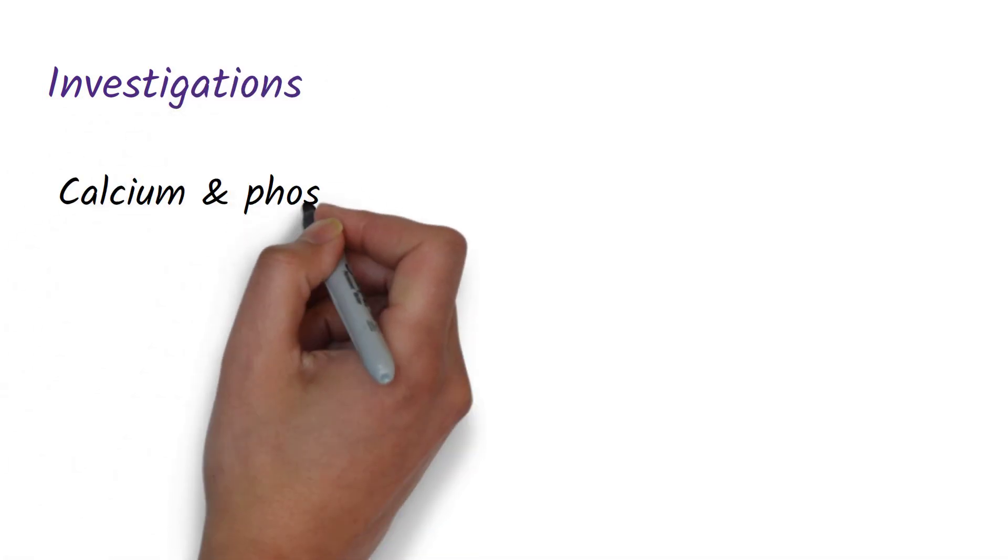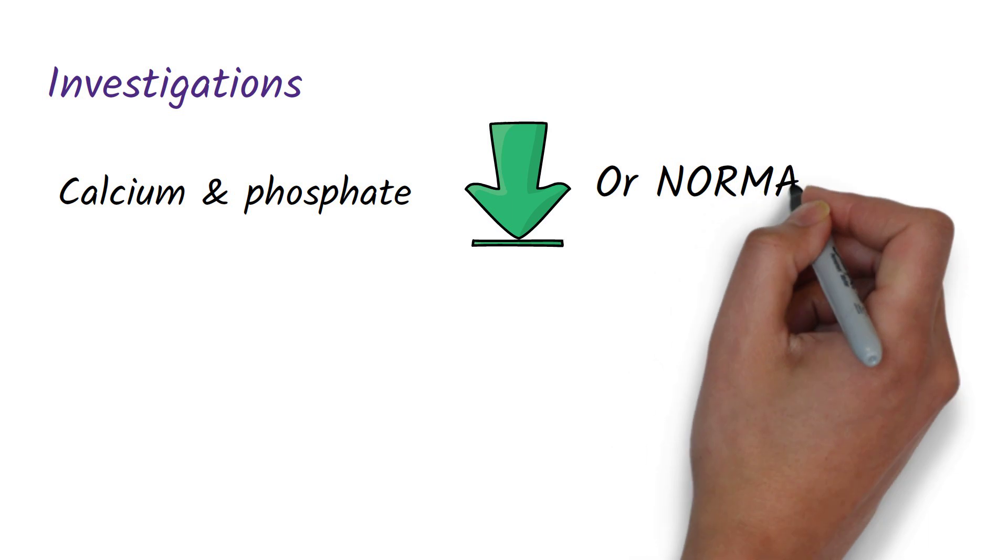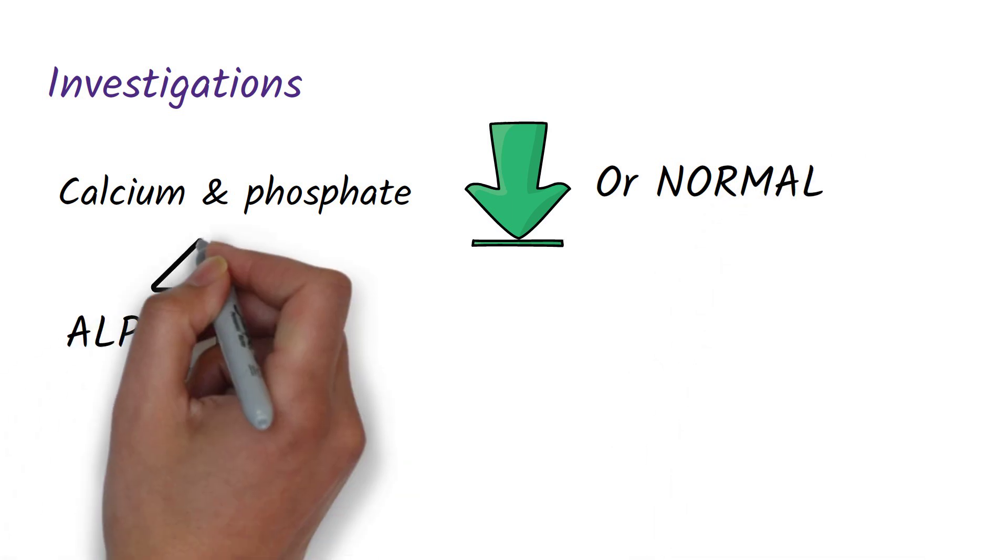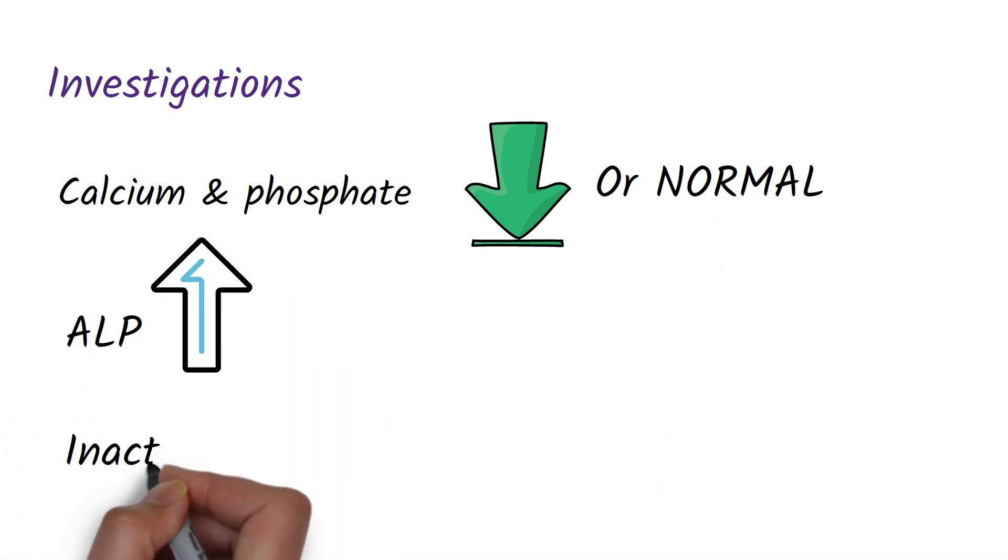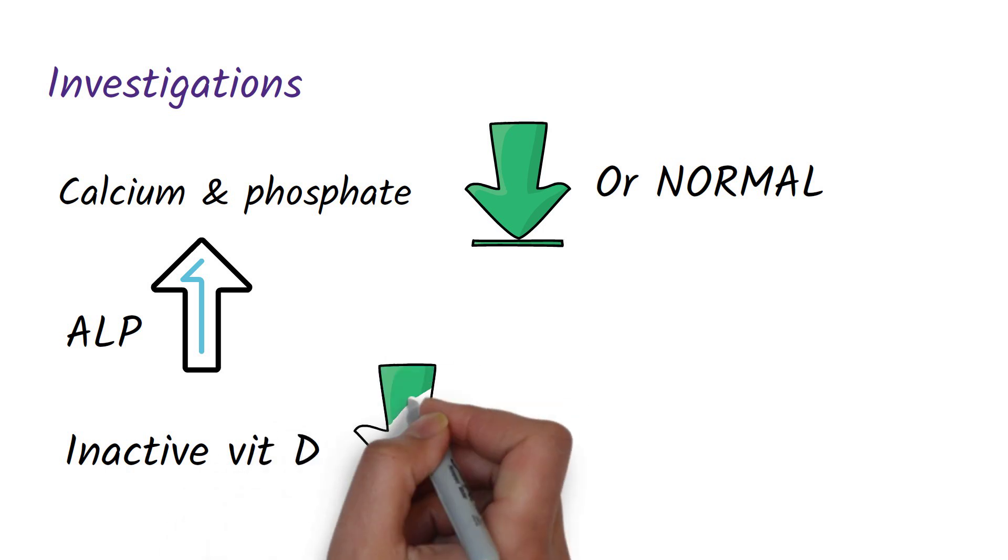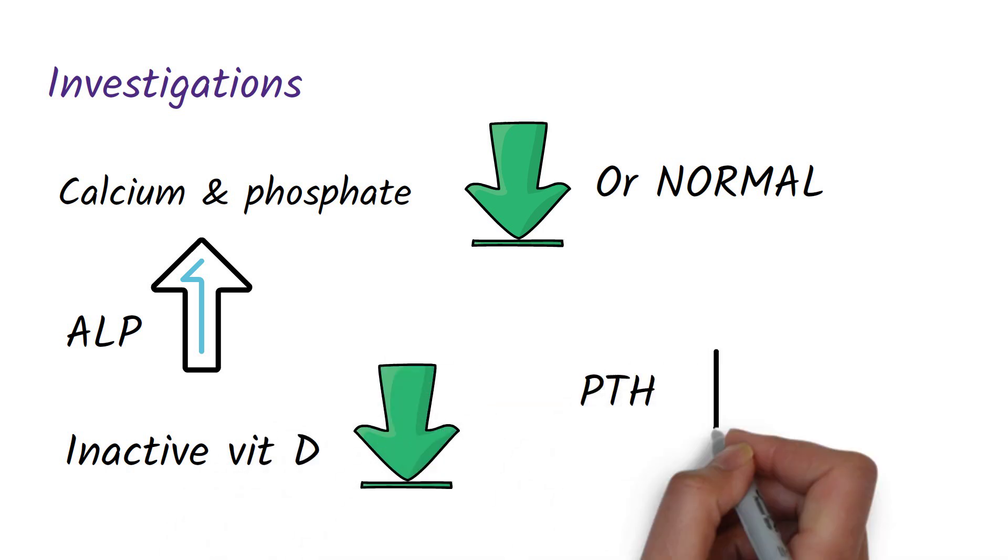Now let's look into what abnormalities are seen in rickets. There will be low or normal serum calcium and phosphate levels depending on the cause, and increased alkaline phosphatase levels, and low 25-hydroxyvitamin D3 levels and high parathyroid hormone levels.